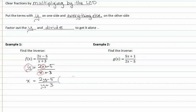First, let's multiply both sides of our equation by the LCD, which is y plus 3. When we do that, the denominator divides with one of our y plus 3's and we're left with x times y plus 3 equal to 2y minus 5.